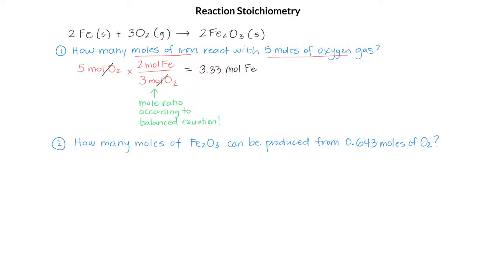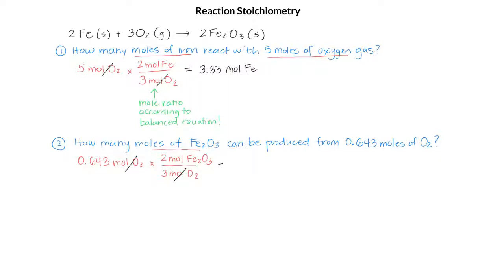Let's try another one. How many moles of iron(III) oxide can be produced from 0.643 moles of O₂? We start with our 0.643 moles of O₂ and multiply by the mole ratio of O₂ to Fe₂O₃, since that's what we're looking for. Looking at our balanced equation, 3 moles of O₂ produce 2 moles of Fe₂O₃. We can cancel out the moles of O₂, which leaves us with moles of Fe₂O₃.